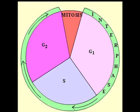However, mitosis is only the M phase of the cell cycle. Interphase accounts for about 90% of the cycle and is divided into G1, the S phase, and G2. During these three sub-phases, the cell grows by creating proteins and cytoplasmic organelles.